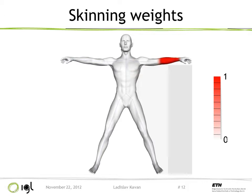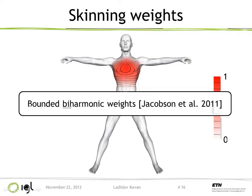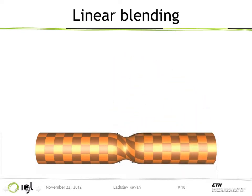Most blending happens near the joints. If you look at more weights — for example the clavicle weight and the upper spine weight — these weights are traditionally painted by artists, but more recently some automatic techniques have been proposed. What we are looking at here are the bounded biharmonic weights. The simple solution for blending bone transformations is linear, which leads to the well-known linear blend skinning — which has the also well-known candy wrapper artifacts while twisting.